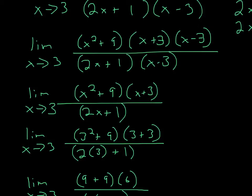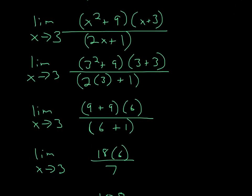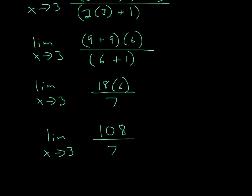So, now since you have all of that, and since you've canceled, you can now try substitution again, see if that works. So, we plug everything in, we plug in all the 3s, and then that gives us 9 plus 9 times 6, 6 plus 1.